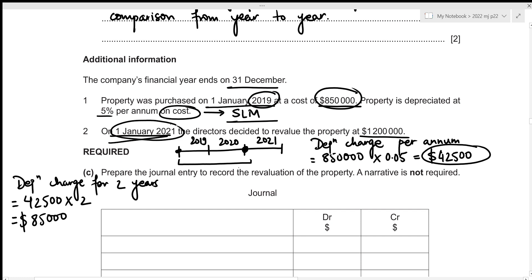Now we can figure out the net book value. The accumulated depreciation for two years is $85,000. Subtracting that from the cost: 850,000 − 85,000 = $765,000 net book value.